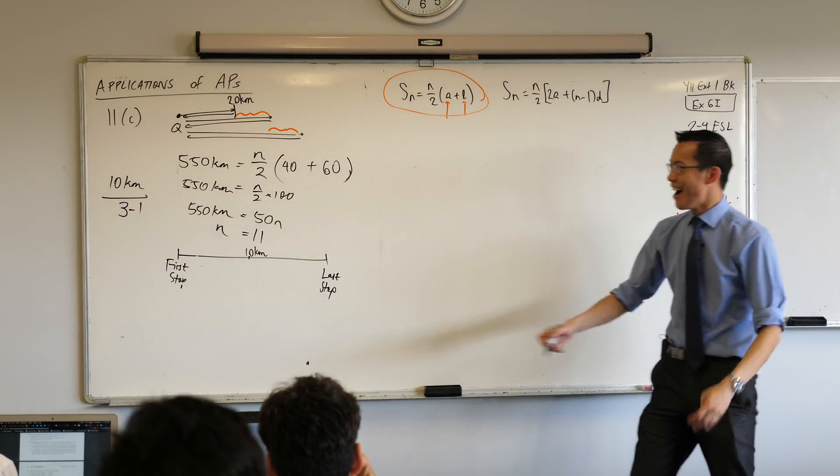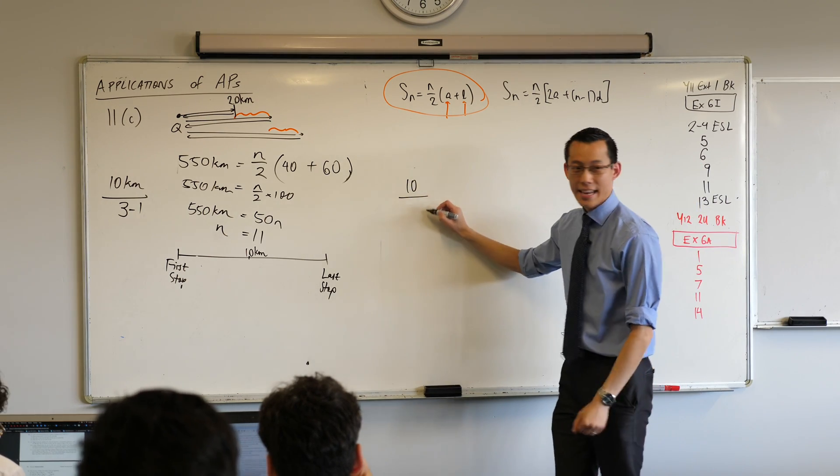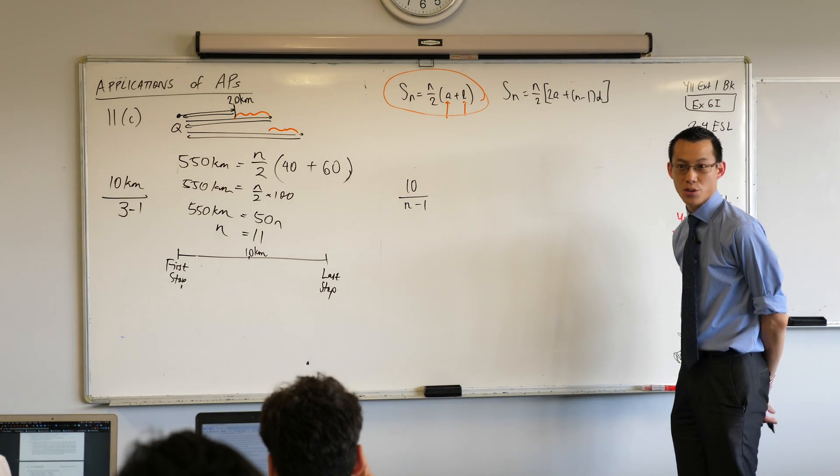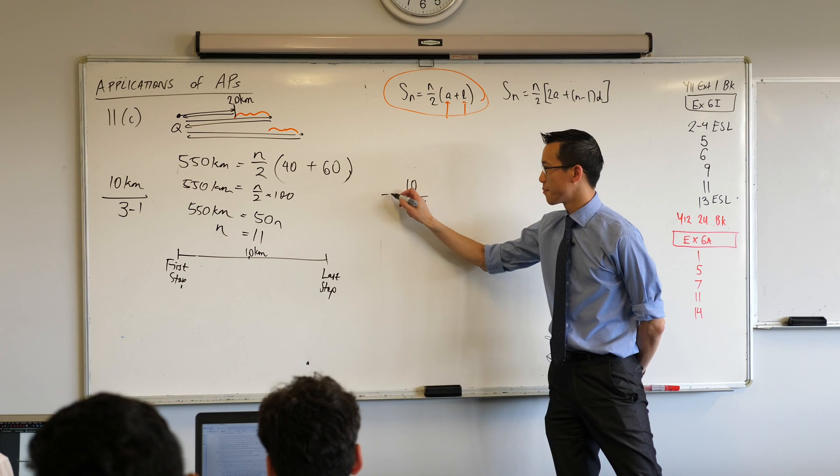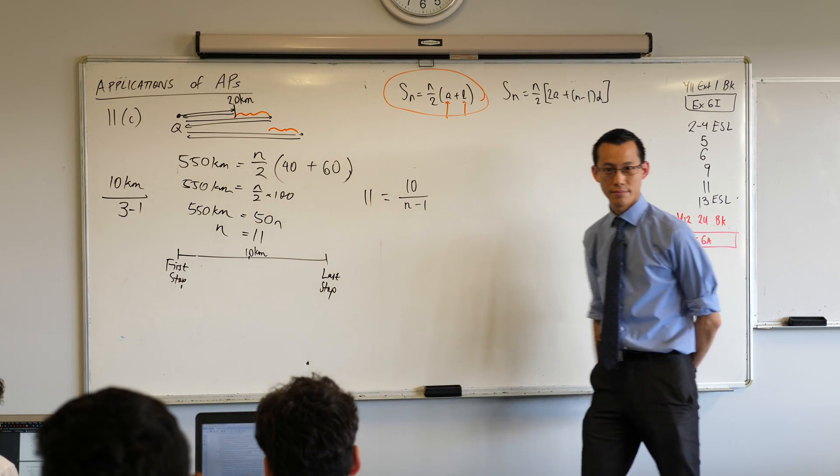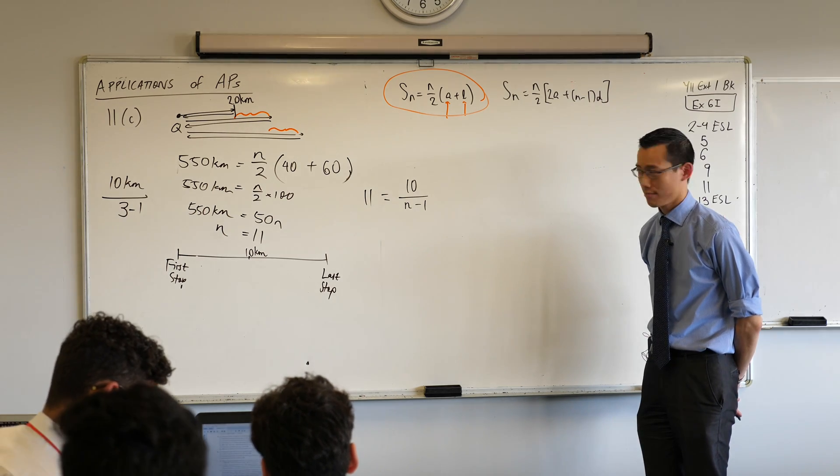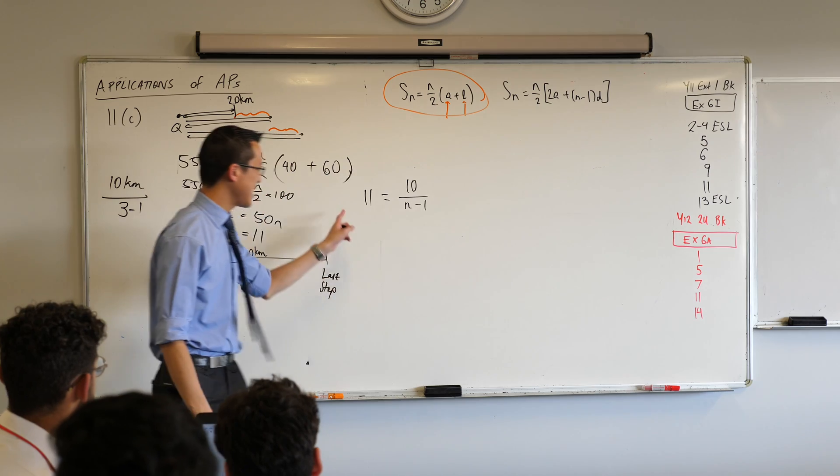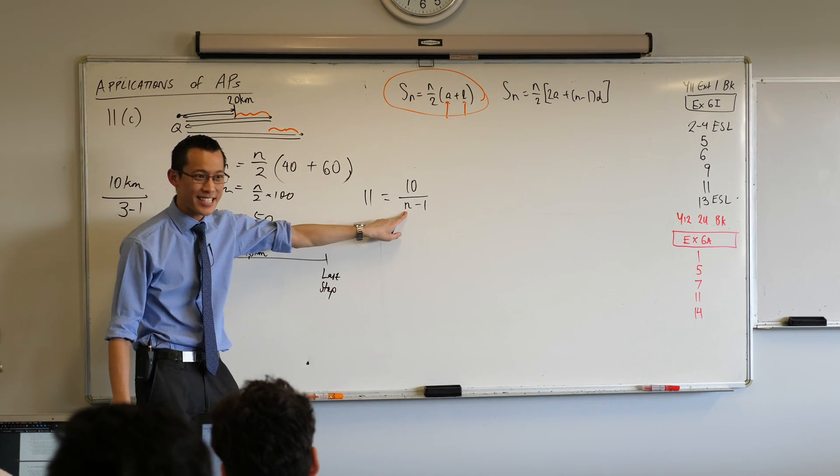Well, I've got 10 kilometres, right? I'm dividing by N minus 1. The N is the thing that I don't know, right? How many stops are there? There are actually 11, right? Now, hold on a second. Hold on. Is this actually equal? 11 is actually this number here, isn't it? Isn't that where it should be?